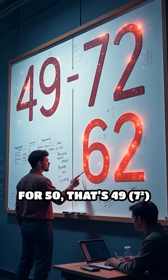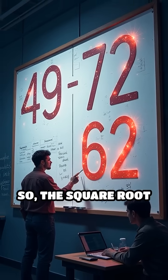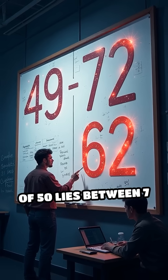Find the nearest perfect squares. For 50, that's 49, 7 squared, and 64, 8 squared. So, the square root of 50 lies between 7 and 8.